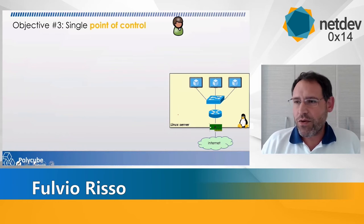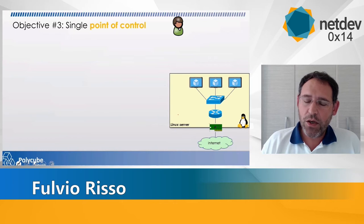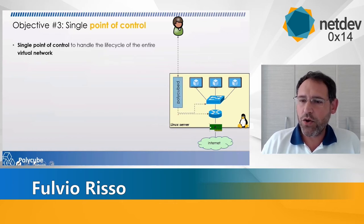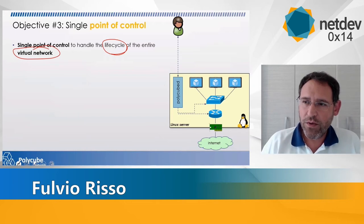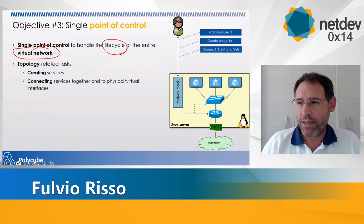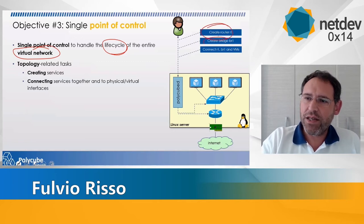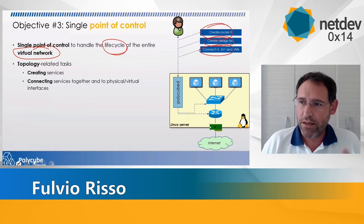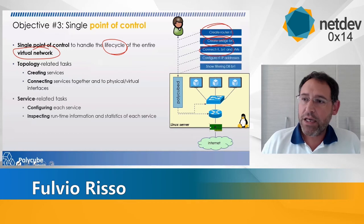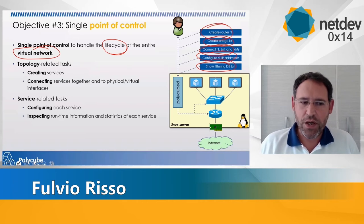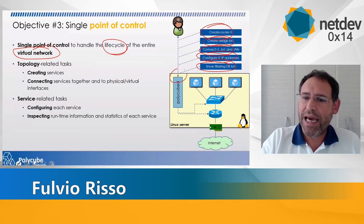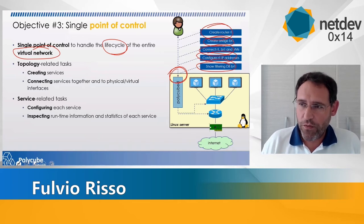Third objective: single point of control. From the user perspective, I would like to control all my network and all my services from a single point. What we did is create a daemon called PolycubeD that handles the entire lifecycle of your virtual network. This means two things: first, it takes care of topology-related tasks — creating devices, network functions, connecting them together. Second, it handles service-related tasks — once you create the router, you may need to configure IP addresses, show statistics of the filtering database on the bridge, and so on. You configure and inspect everything from the same single point of control.